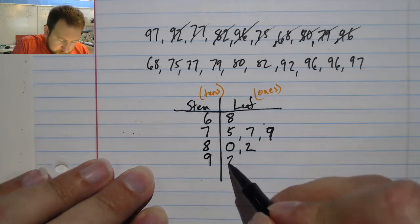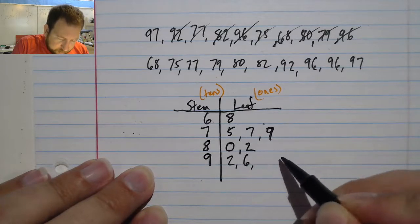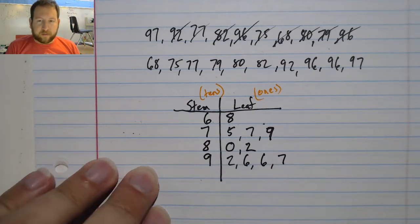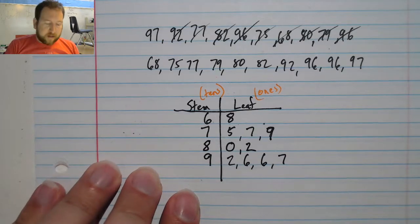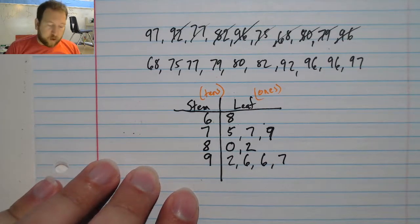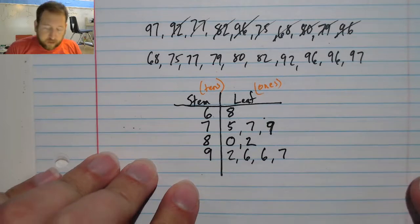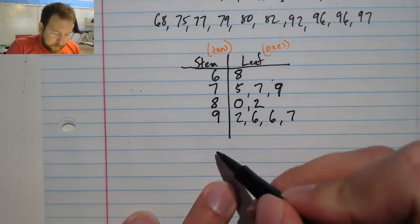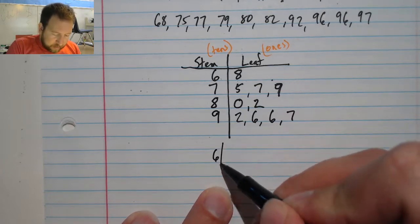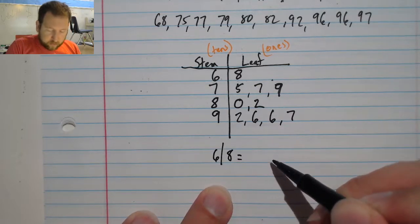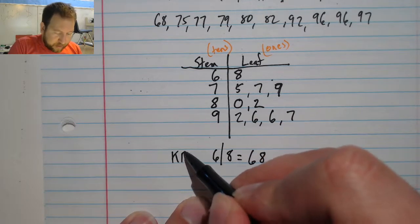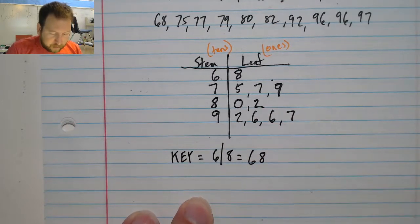My 90s, I have a 92, 96, another 96, and a 97. And this is how my stem-and-leaf plot works. Now I also like to put a key just for people that aren't quite sure what the heck this thing is. So I'm going to write my six line eight equals 68. And this is my key.